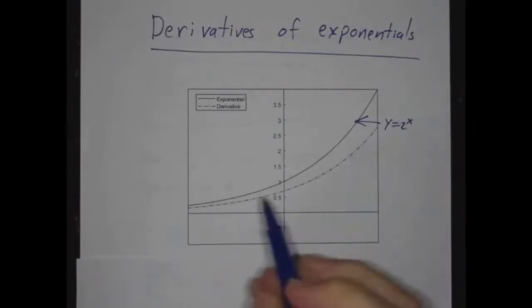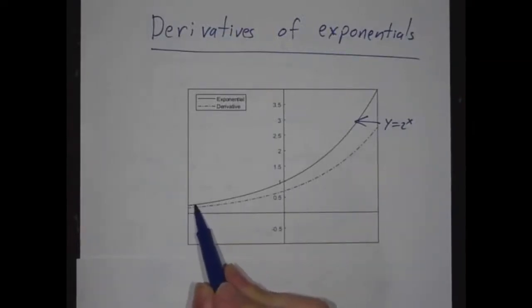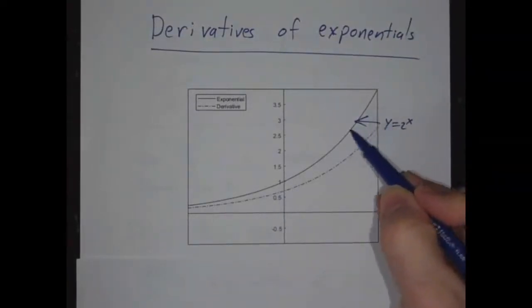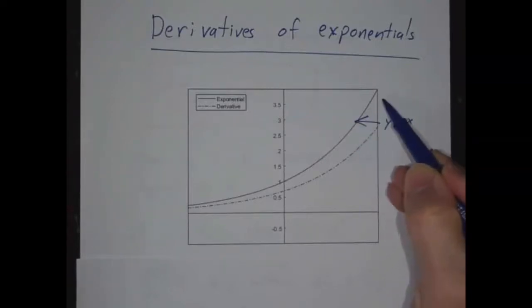The dashed line is its derivative. Over here, where the function is small, it's growing very, very slowly, and the derivative is small. Over here, the function is growing at a moderate rate, and the derivative is bigger. Over here, where the function is big, it's growing quickly, and the derivative is big.